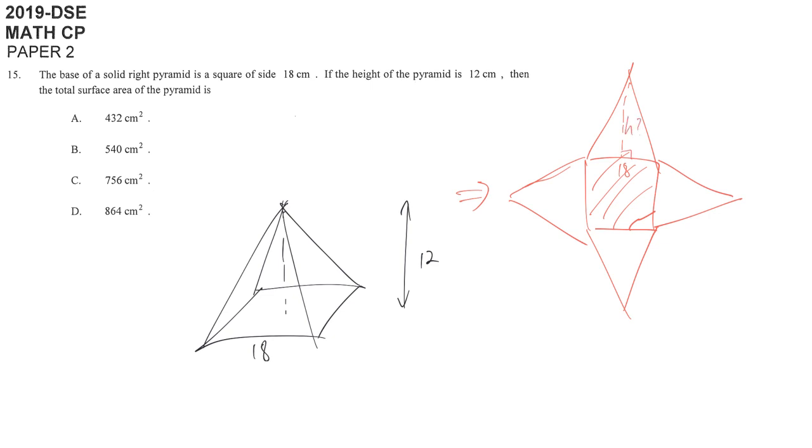If we go back to the original graph, the height means this one. And then maybe some of you realize that we are going to consider the right angle cross-section triangle here. Because it's a right pyramid, so the projection of the vertex here is exactly the middle of the square. So this length is 9, half of 18.